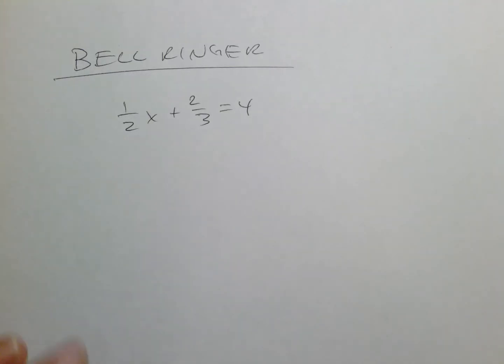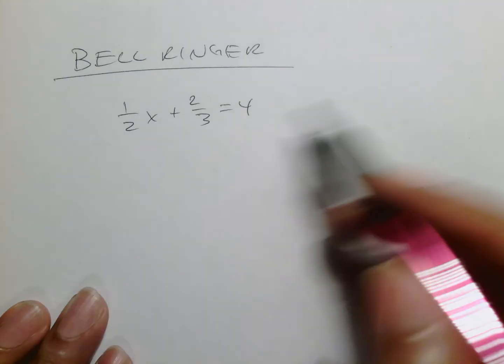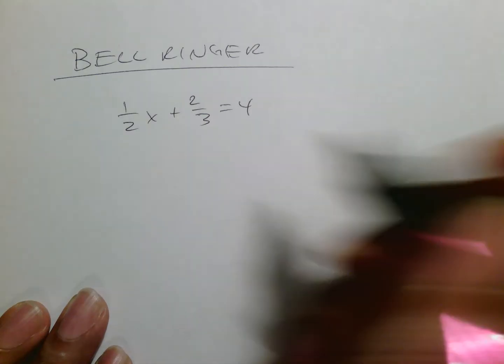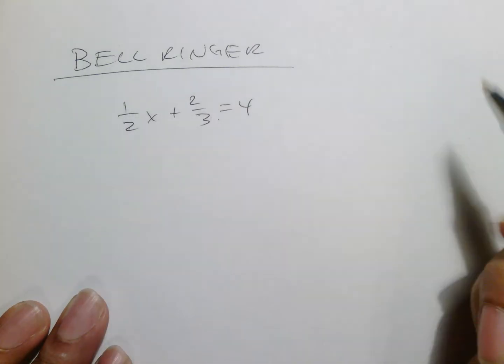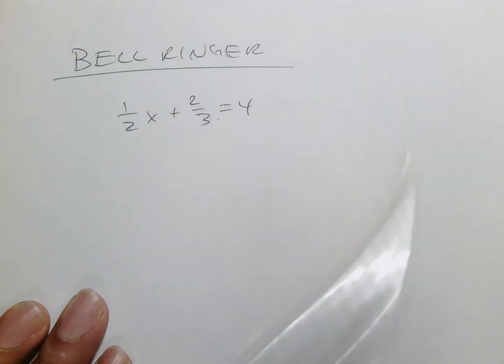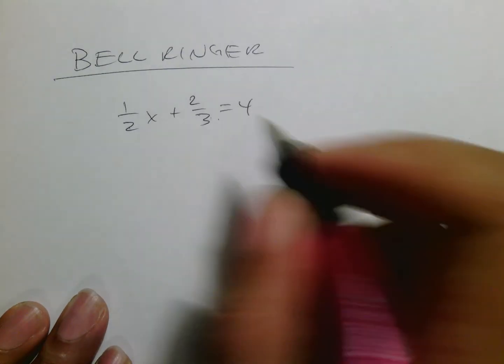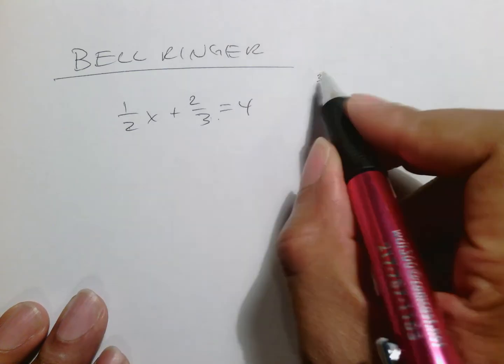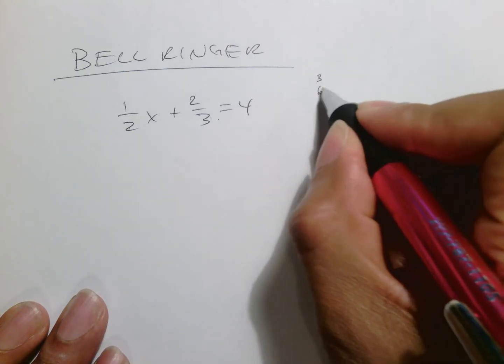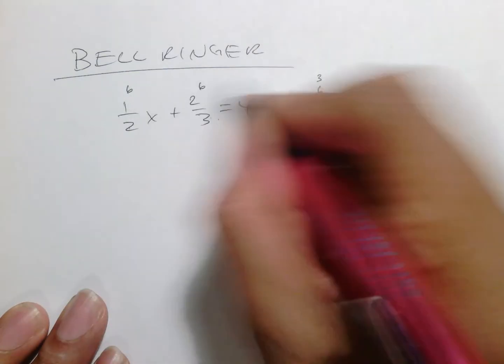Okay, so let's begin this with the bell ringer for the day. 1 half x plus 2 thirds equals 4. You should have thought that you want to kill the fraction first, which is what this whole next two weeks is about, is making sure you get that in your system. This is where you look at 2 and 3 and try to find out where 2 and 3 meet. Of course, 2 cannot turn into 3, but the next multiple of 3 is 6, so you multiply everything by 6.